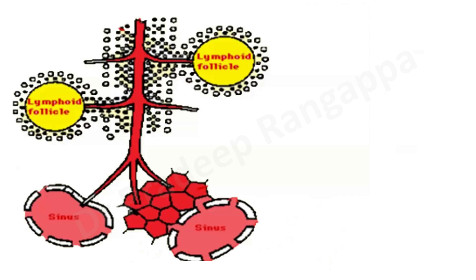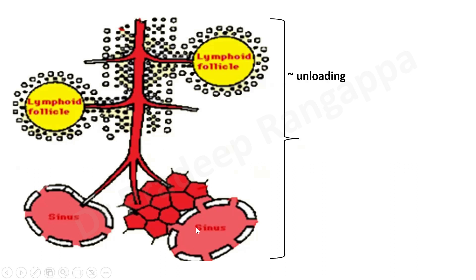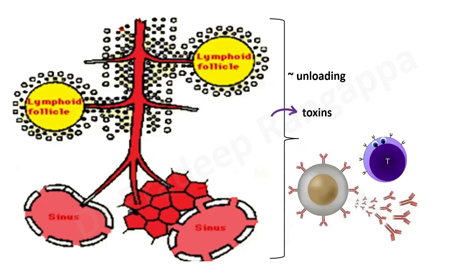Plasma exchange or plasmapheresis or therapeutic apheresis also helps in unloading the reticuloendothelial system. This is a pictorial representation of the reticuloendothelial system, which has lymphoid follicles and sinuses in the spleen. By doing this, it helps in removing toxins from the system and helps produce activated clones of lymphocytes, which is also beneficial in certain autoimmune conditions. These are some of the other benefits of doing plasma exchange.